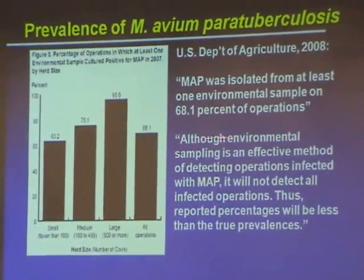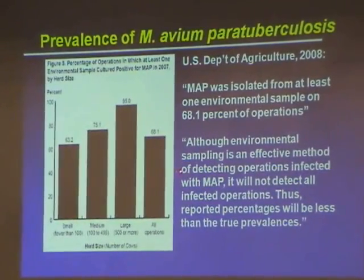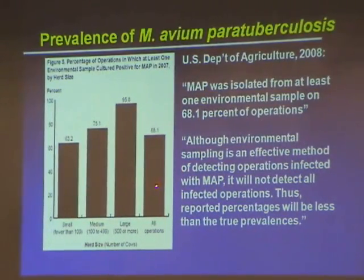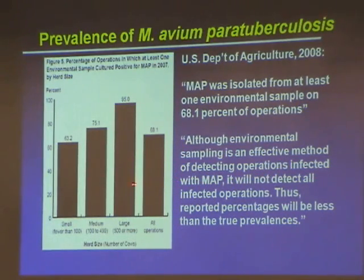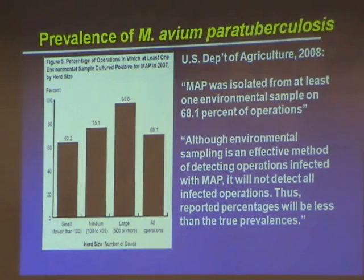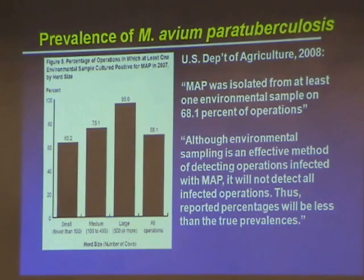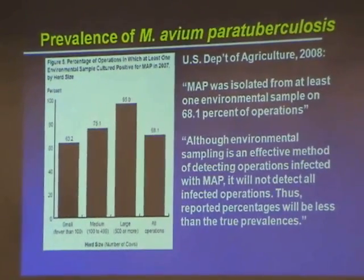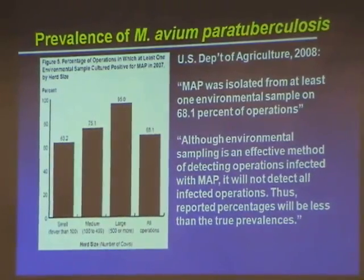What they actually wrote is that although environmental sampling is an effective method, it will not detect all infected operations. Thus, the reported percentages will be less than the true prevalence. So using what they think is an underestimate, they say 68% of dairy operations in the U.S. are affected. Does that mean it causes Crohn's disease? No — that's a problem for the USDA and Agriculture Canada to resolve. But I think it shouldn't be overlooked; somebody's got to look into that.